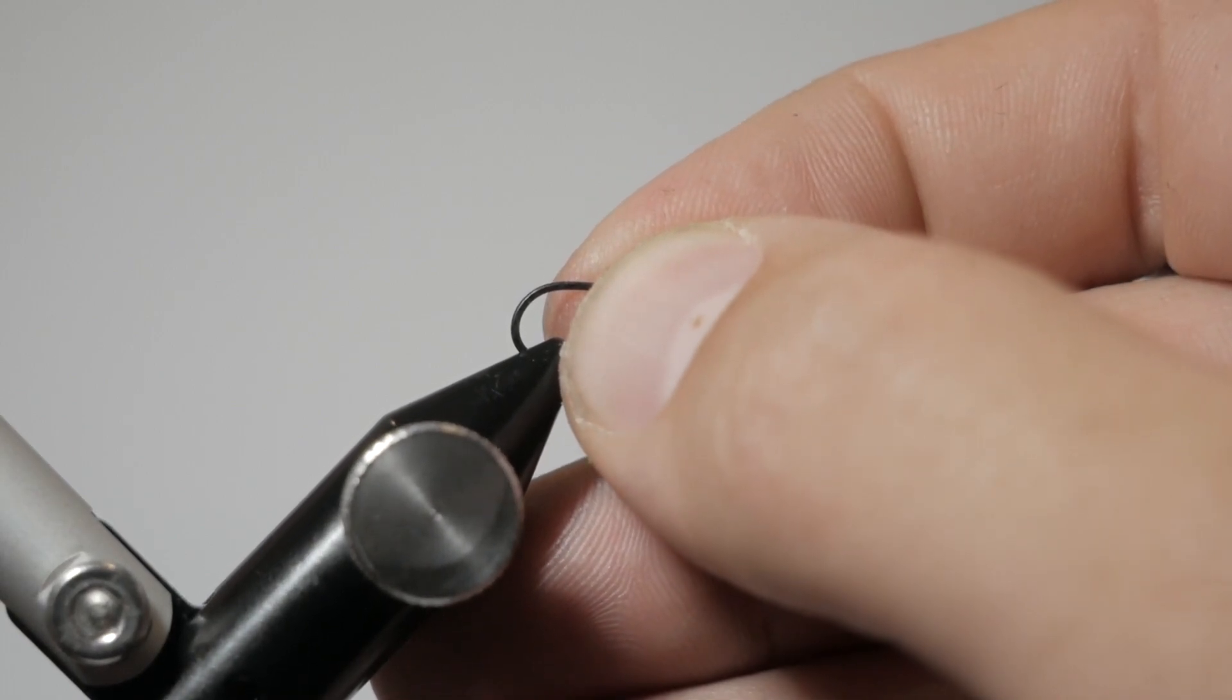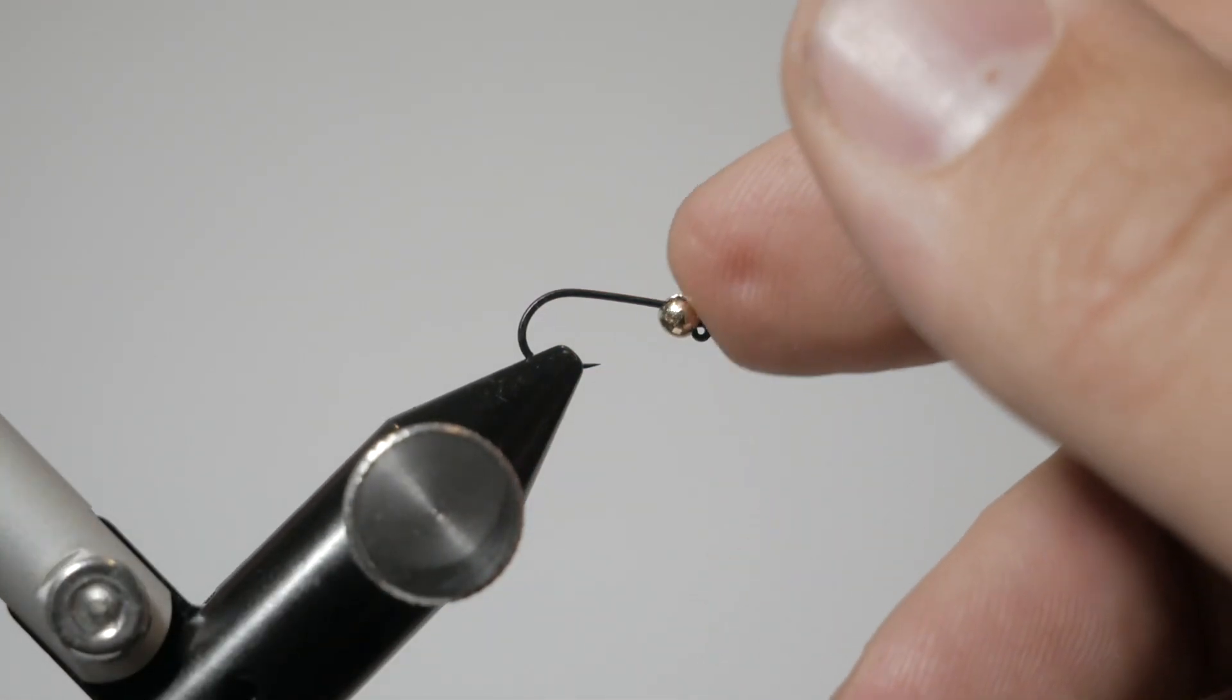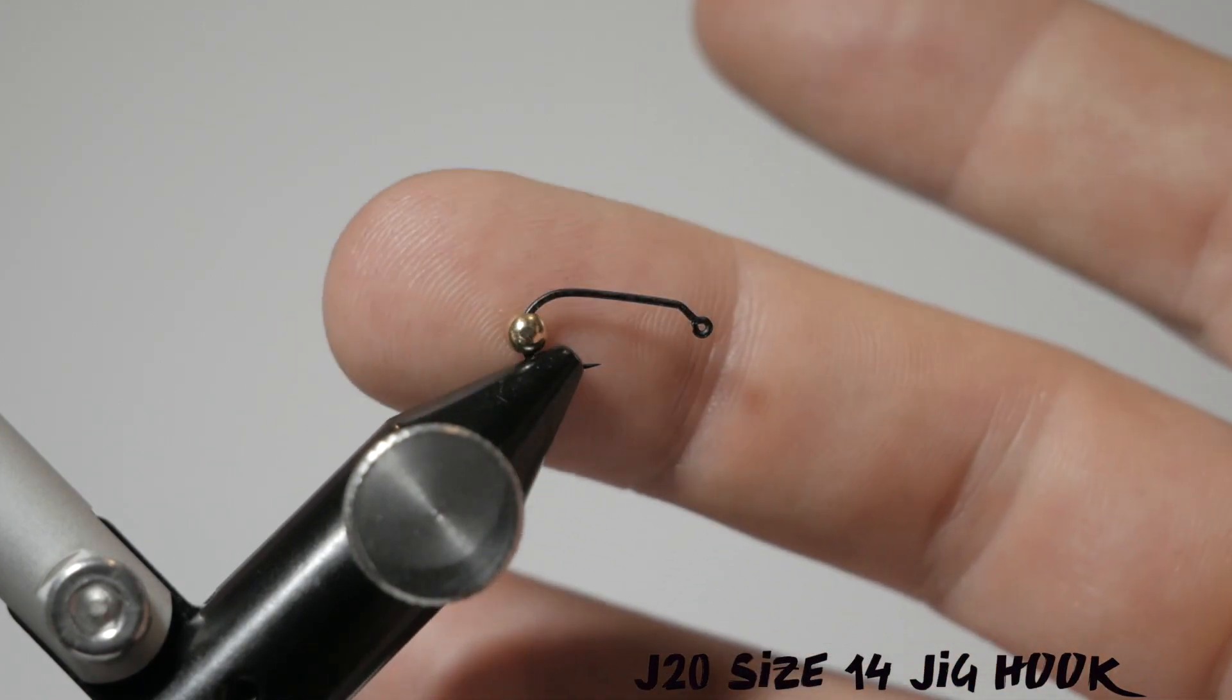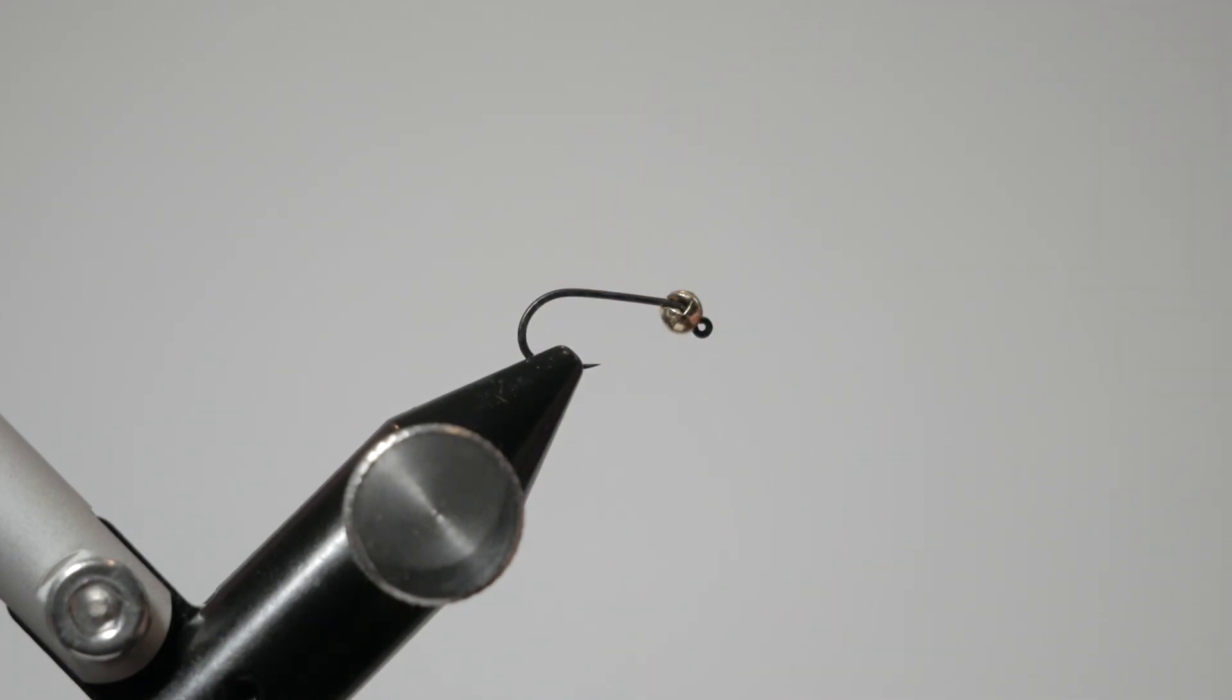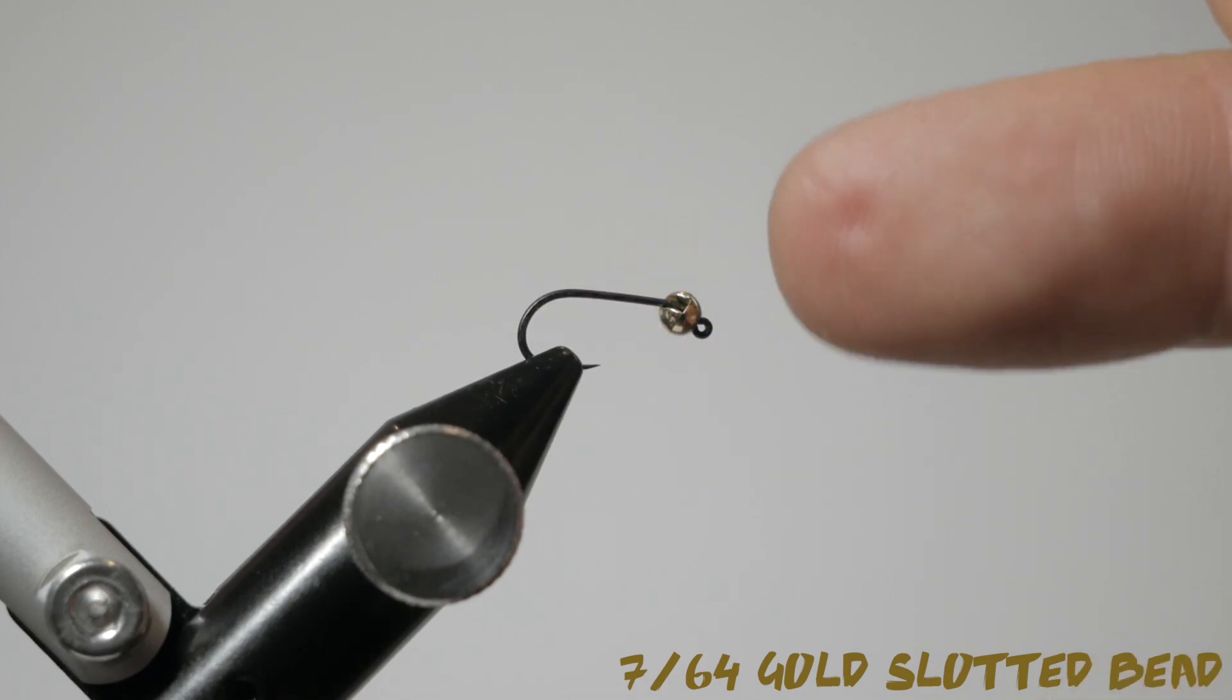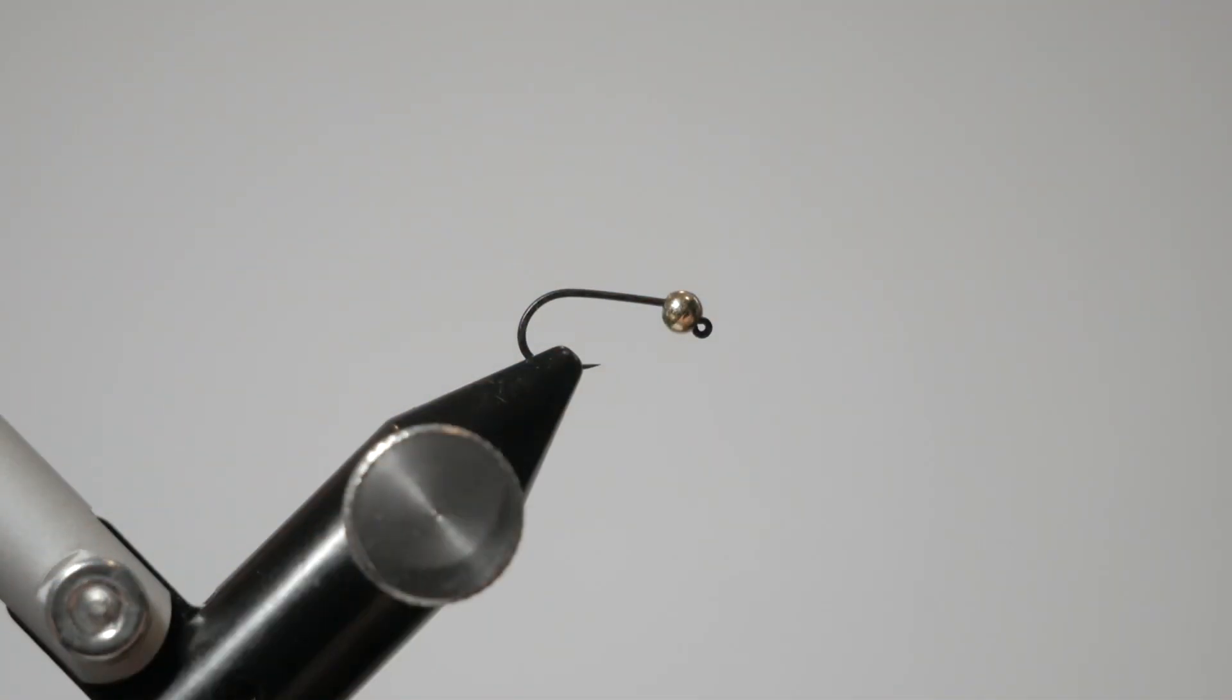Basically what I have in here is a jig hook - if you don't know what a jig hook is, they're the ones that have a bit of a bend in them. This particular one is a Gamakatsu J20 and I have this in a size 14. The other thing to note is that the bead on here is a 7/64 slotted gold bead, and there are two sides to the bead. Tim is very adamant that the squared off side, which is the side we're looking at here, is always facing down. The bead just kind of sets the correct way on the head of the fly.